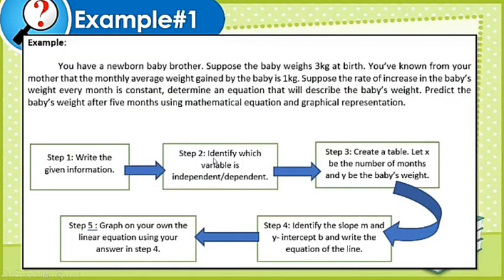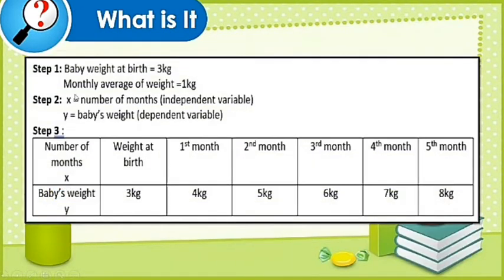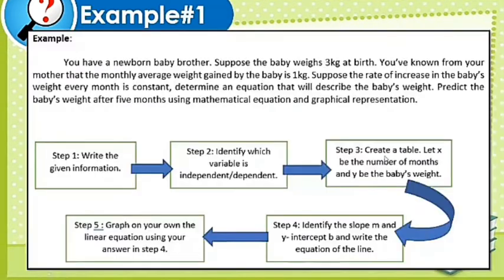Step 2: Identify which variable is independent and which variable is dependent. X is our independent variable, the number of months. And our dependent variable is Y or the baby's weight. Step 3: Create a table. Let X be the number of months and Y be the baby's weight.